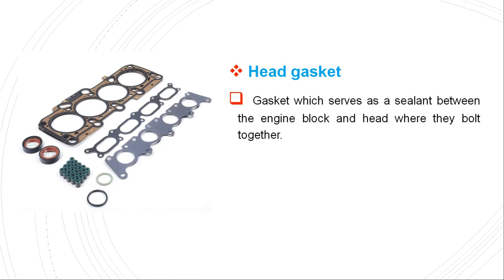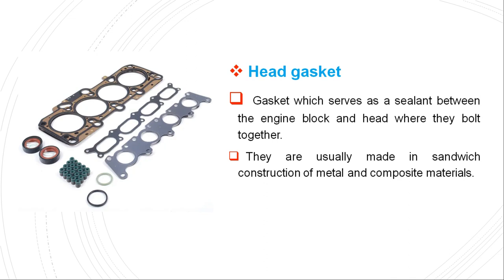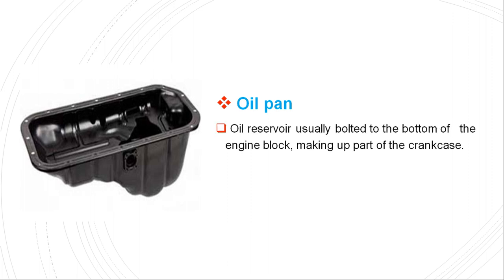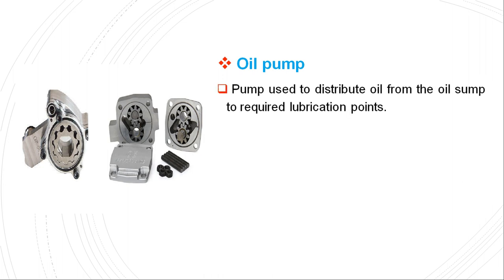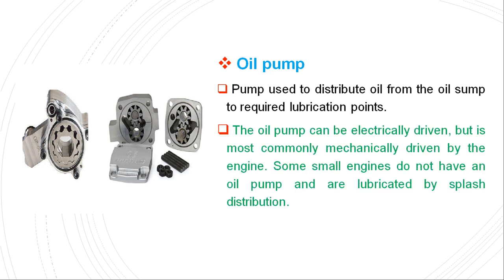The head gasket serves as a sealant between the engine block and head where they bolt together. They are usually made in sandwich construction of metal and composite materials. The oil pan is an oil reservoir bolted to the bottom of the engine block, making up part of the crankcase, and acts as the oil sump for most engines. The oil pump is used to distribute oil from the oil sump to required lubrication points. It can be electrically driven but is most commonly mechanically driven by the engine. Some small engines do not have an oil pump and are lubricated by a splash lubrication system.